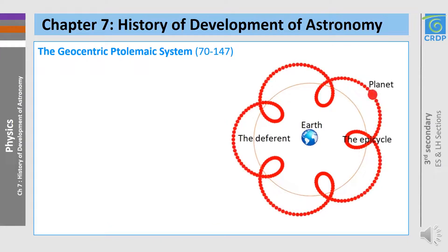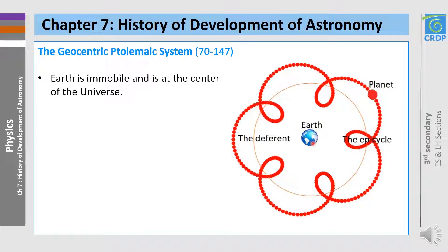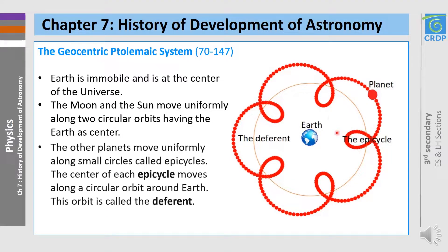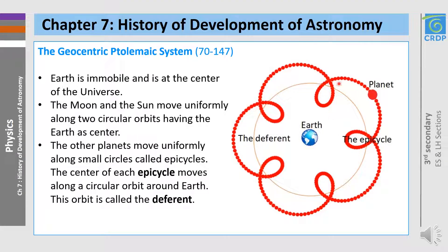As for the geocentric Ptolemaic system, Earth is immobile and is at the center of the universe. The moon and the sun move uniformly along circular orbits having the Earth as center. And the other planets move uniformly along small circles called epicycles. The center of each epicycle moves along a circular orbit around the Earth, and this orbit is called the deferent.